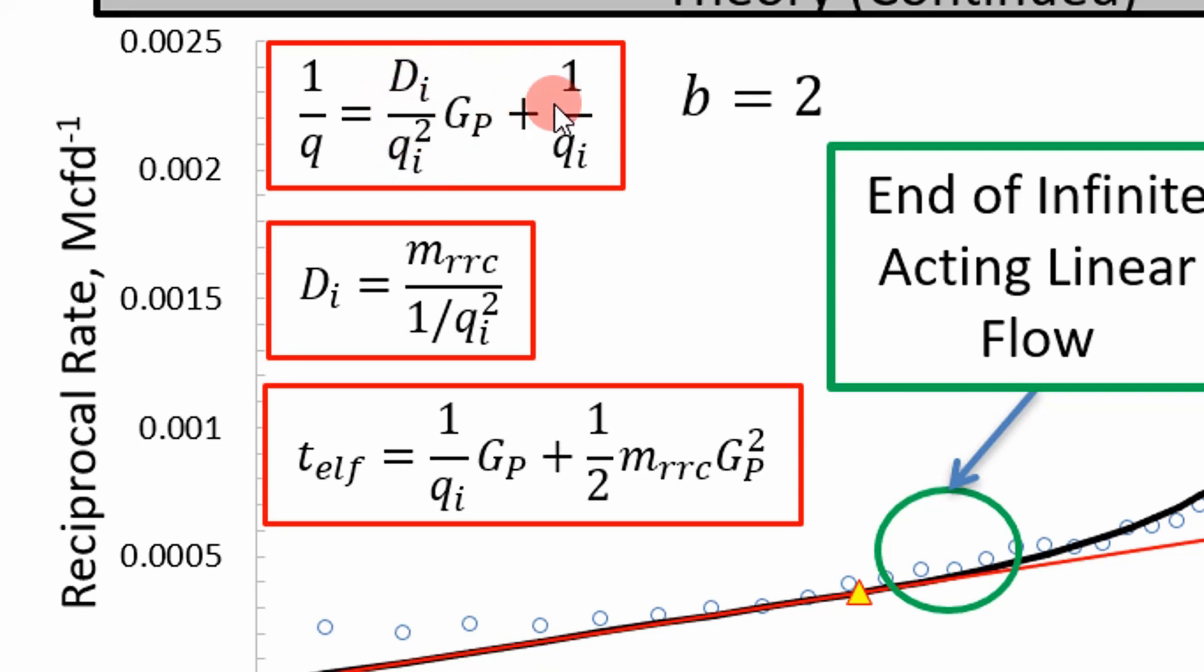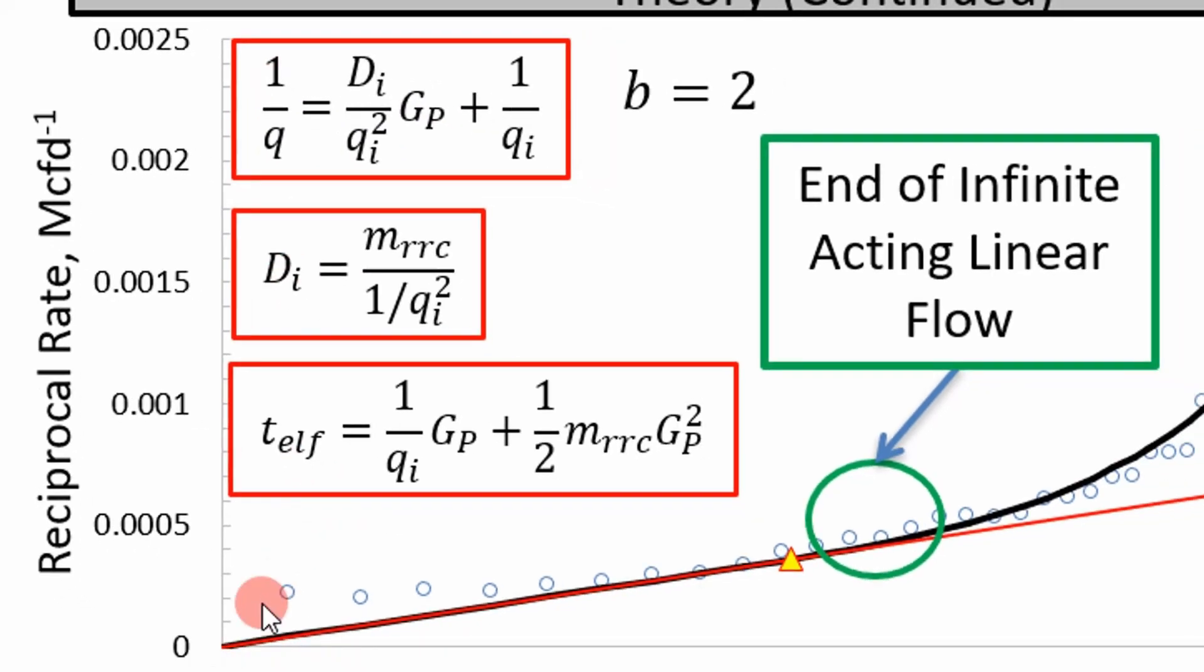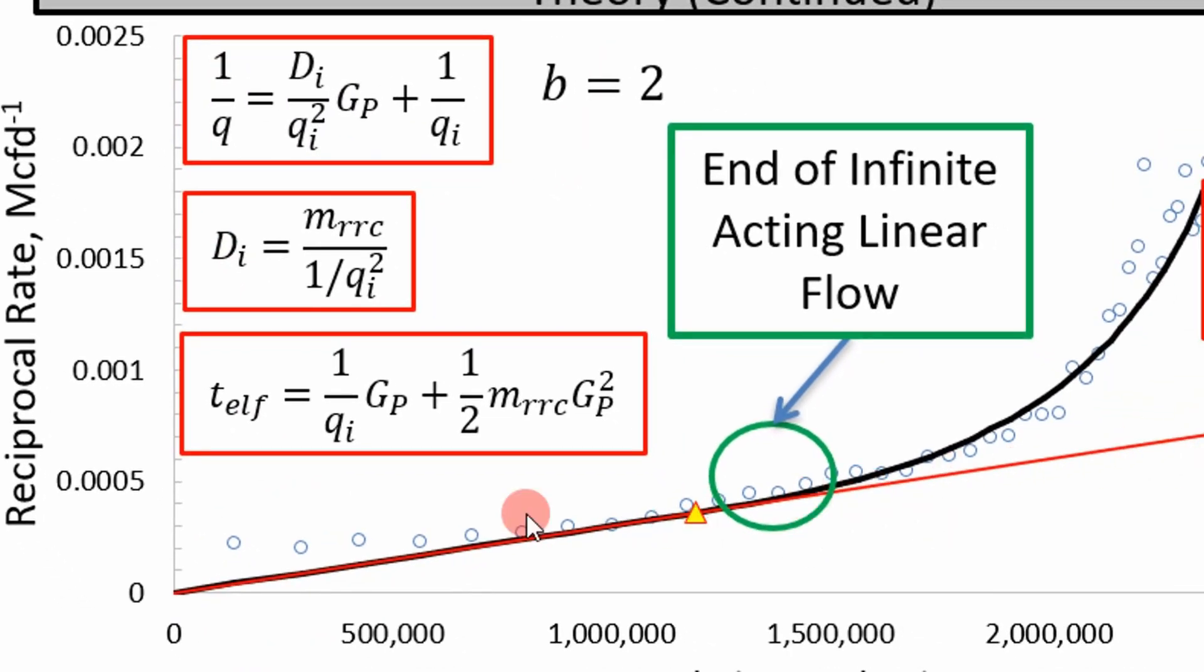And so here's your x and then your 1 over rate is going to be your y. So this is why this is a straight line, this red line. And so if you do the mathematics,